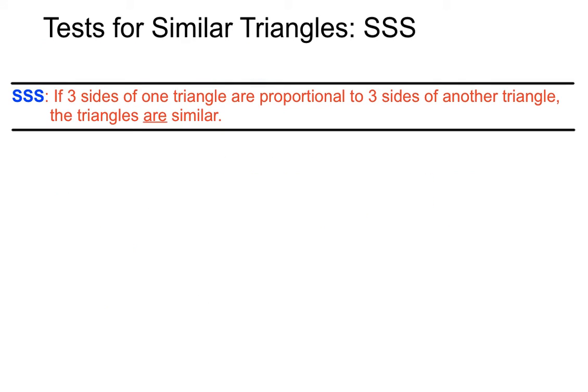So there we have it. The test for similar triangles, SSS. If three sides of one triangle are proportional to three sides of another triangle, then the triangles are similar. It's a proof for similar triangles.